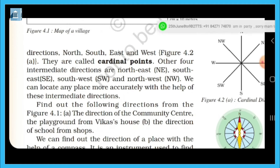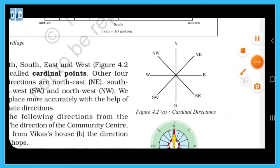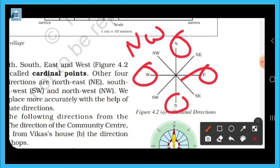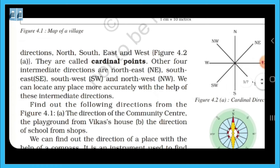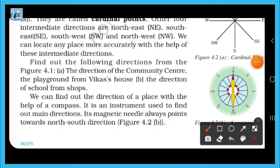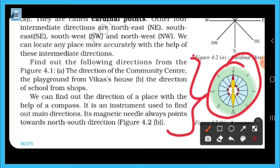With the help of intermediate directions, we can locate any place more accurately. The intermediate directions are north-west, north-east, south-east, and south-west. Direction is also very important. A compass can help you find the main directions. The compass needle always points towards north.